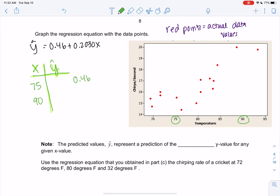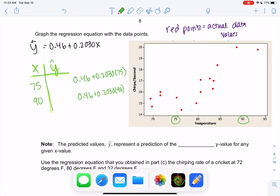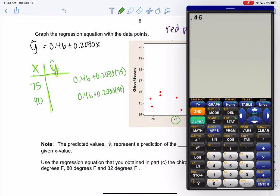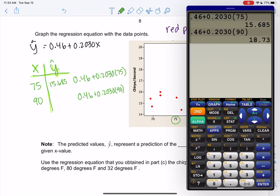So we'll do 0.46 plus 0.2030 times 75, and 0.46 plus 0.2030 times 90, and these are my predicted values. So at 75 degrees we think about 15.685 chirps, and 90 degrees would be 18.73 chirps per second.